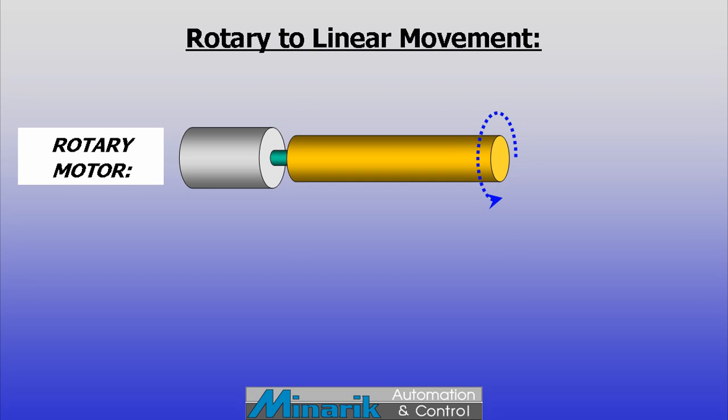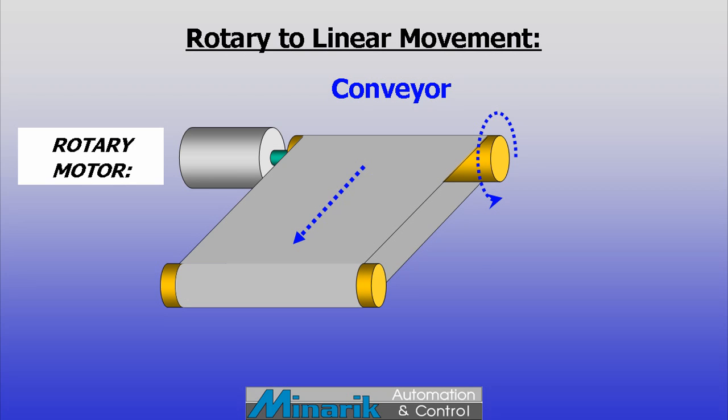For linear movement, the common approach is to convert rotation into linear motion mechanically. Rotary motors can turn belts or chains, direct drive or pinch rollers. When used with other rollers, this creates linear, conveyor type movement.